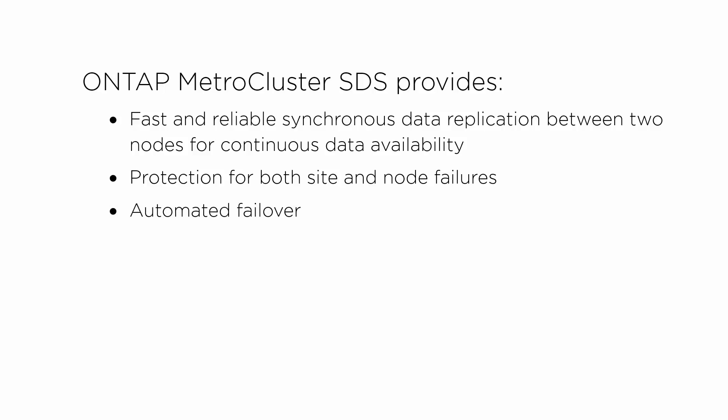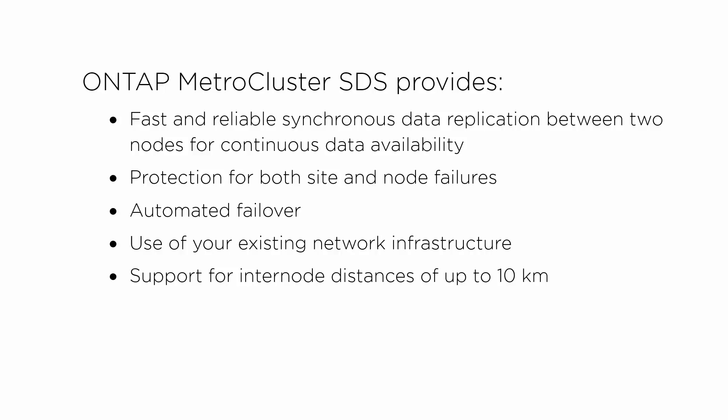It provides automated failover to protect your data, keeping your business operational even when no one is monitoring operations. It uses your existing network infrastructure — no new hardware is needed. And it supports inter-node distances of up to 10 kilometers. Placing nodes in different locations protects your data against unplanned events such as fire, floods, or power outages.